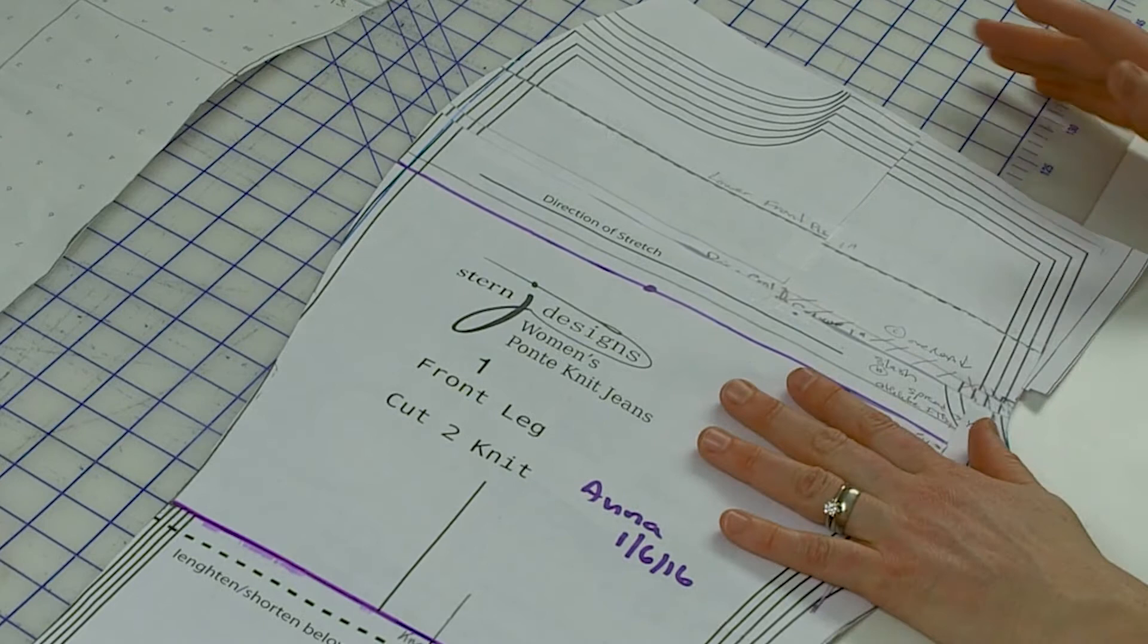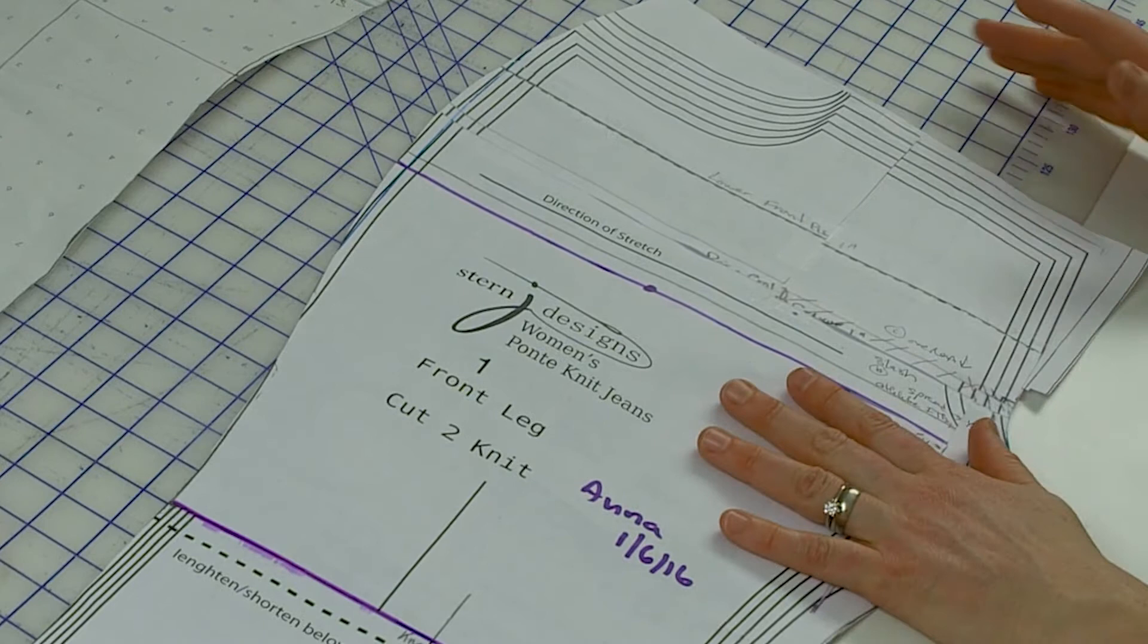This is an adjusted pattern for my new Ponte Knit jeans that I used the graded nest for. You can see here all the sizes are on this pattern where I didn't have to cut it away.